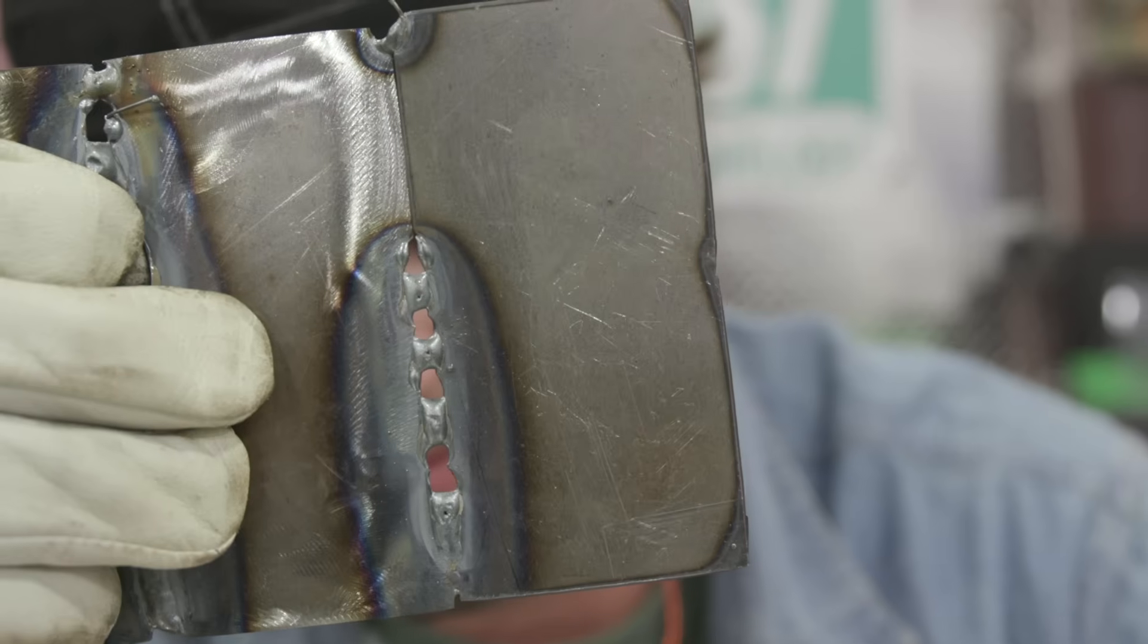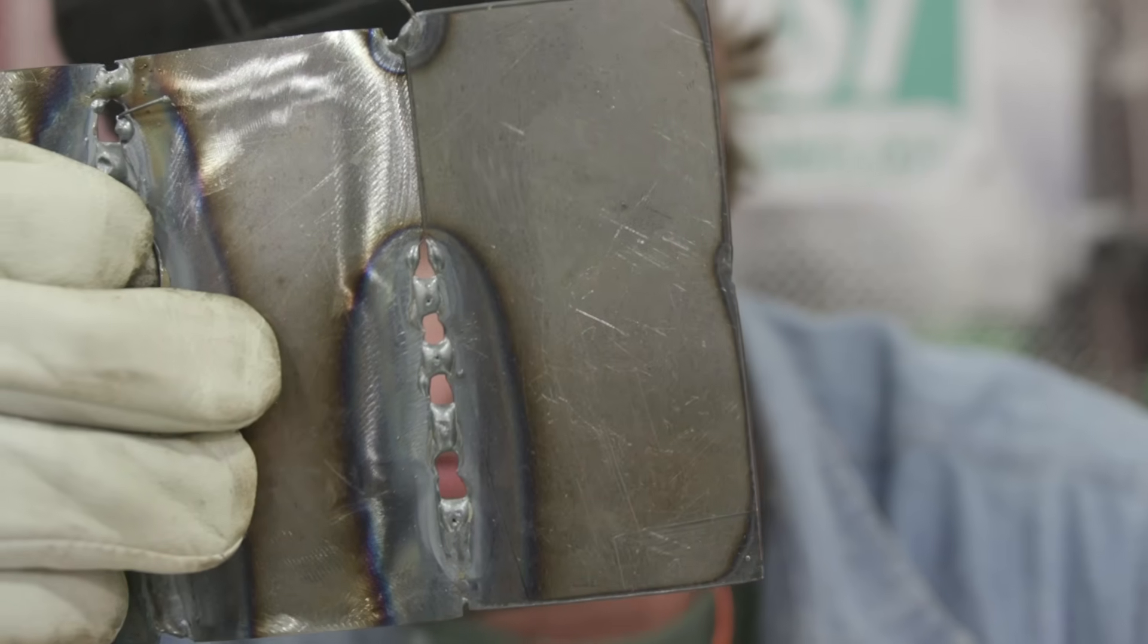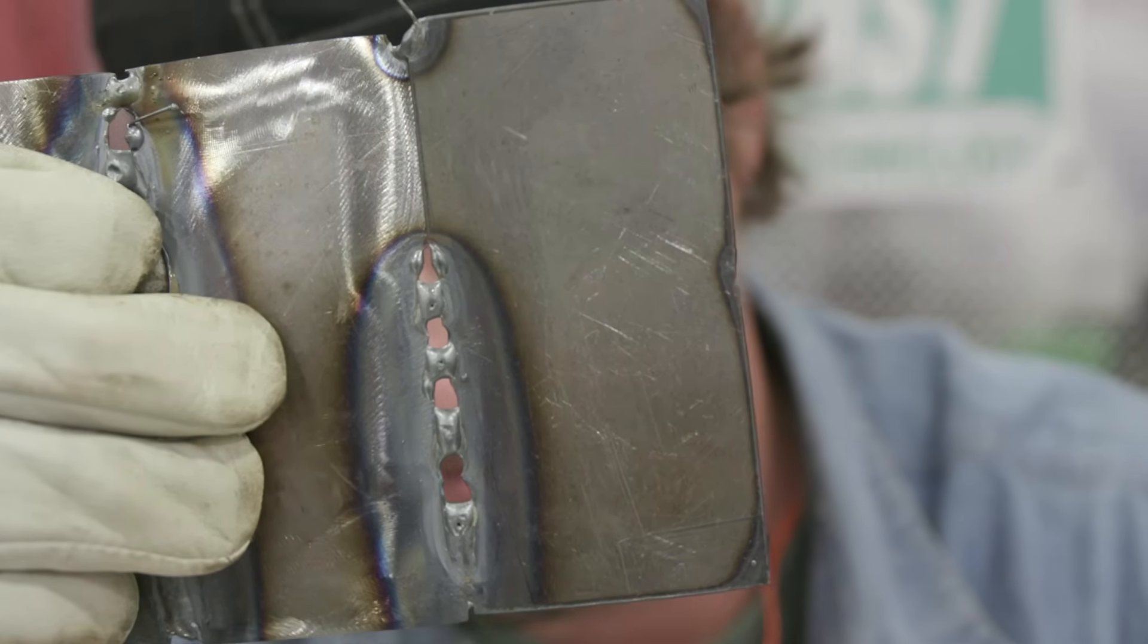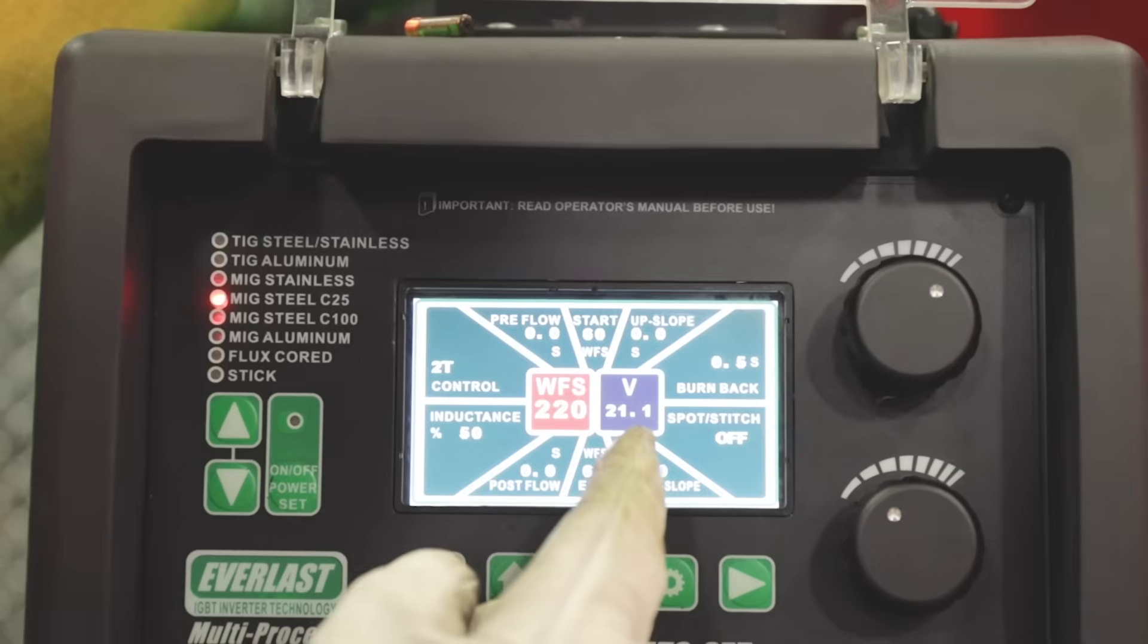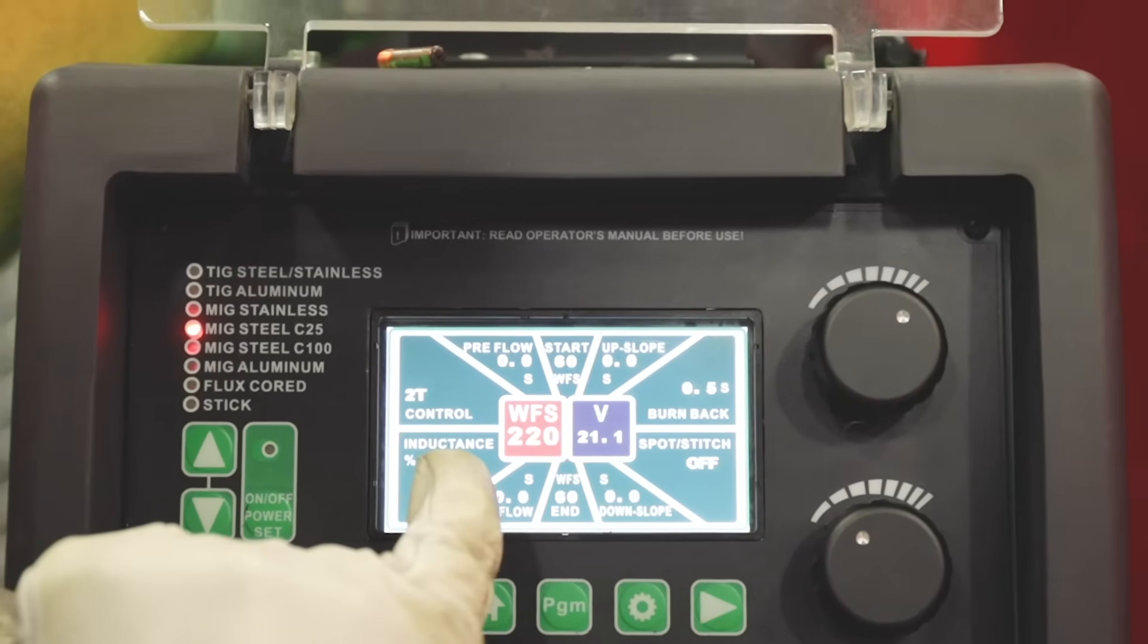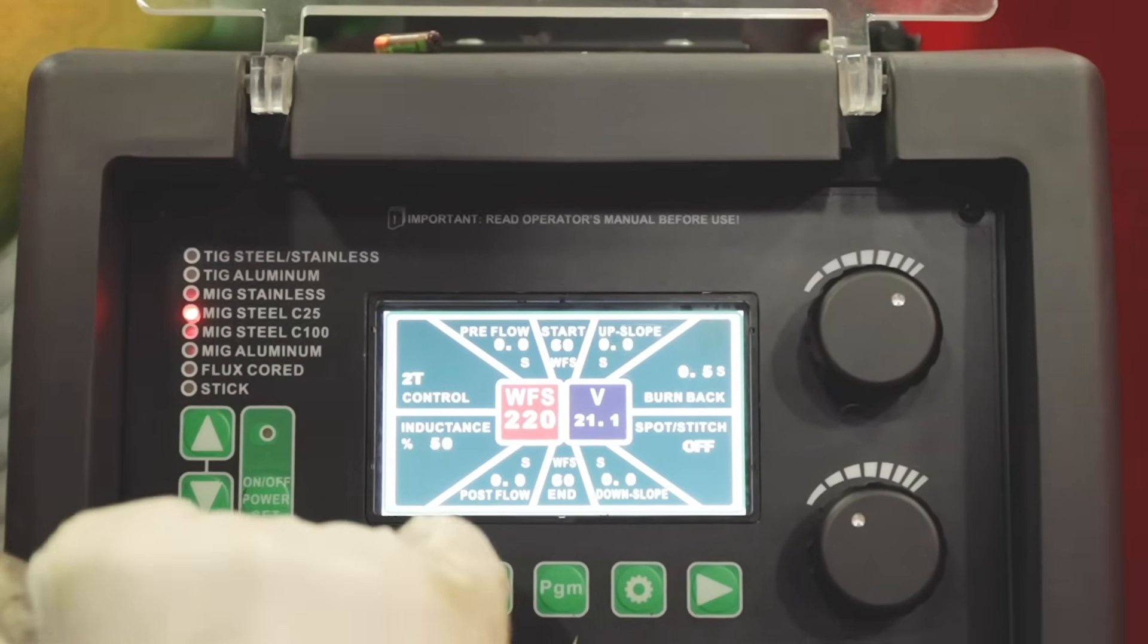That leads us to the next one, blowing through. That's caused from going too slow, wire speed too high, and volts too high, and welding in one spot too long if you want to jump around. I'm going to show you now how to fix it. We definitely need to adjust our volts down and wire feed speed. I turned my spot and stitch off.